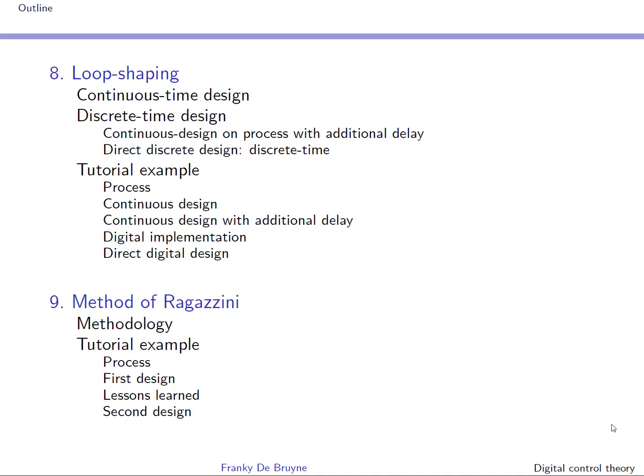Section nine introduces Ragazzini's method, also known as model reference control. The behavior of the closed loop system is imposed using a desired closed loop reference model. We will see that we have to take precautions when we design this desired closed loop reference model, because we have to prevent inter-sample hidden oscillations.